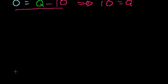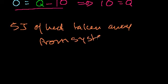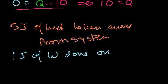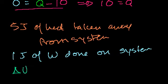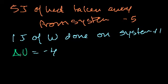Let's do one more problem. Say 5 joules of heat are taken away from the system, and 1 joule of work is done on the system — maybe we're compressing the balloon. What is our change in internal energy? The way I think about it: 5 joules of heat taken away reduces internal energy by minus 5. One joule of work done onto the system puts energy in, so that's plus 1. Minus 5 plus 1 gives a change in internal energy of minus 4 joules.